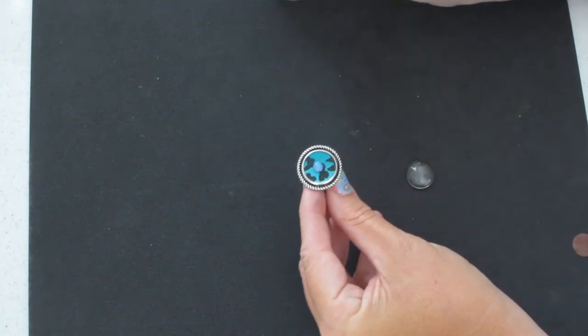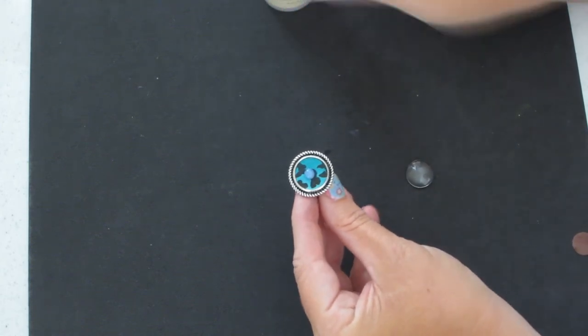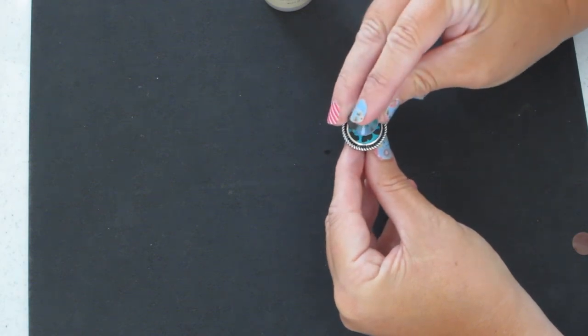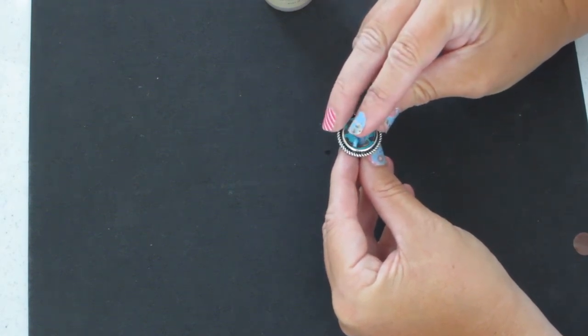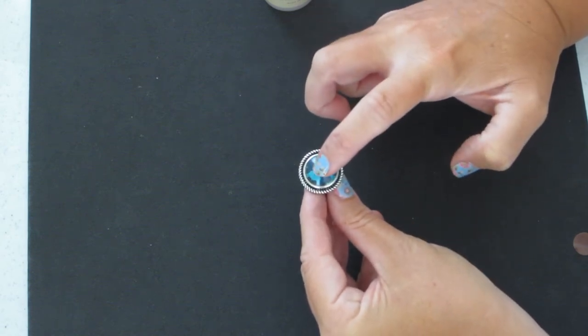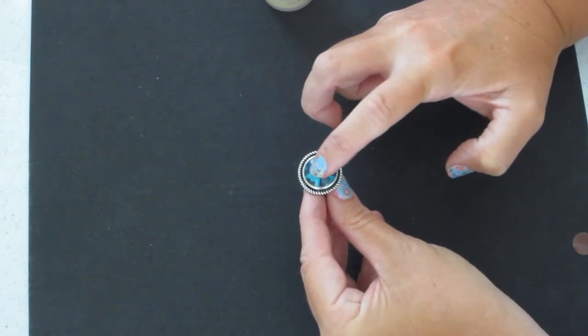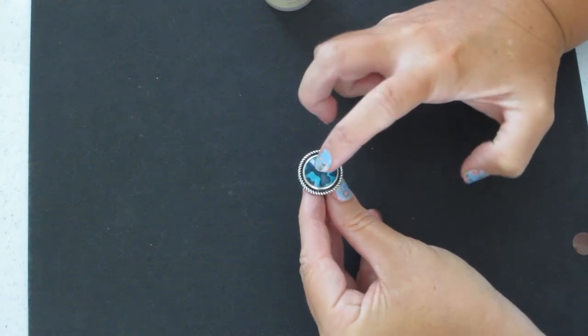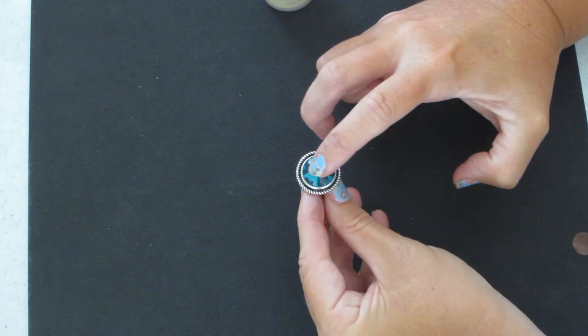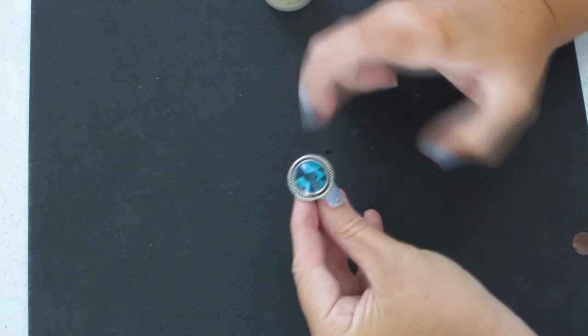You can even make, you know, like clear glossy effects on top of things with it. But it's also a really good adhesive. So I just put a dot in the center there, and I'm just going to press gently so that it spreads out completely underneath the glass round that goes on the top of the ring.